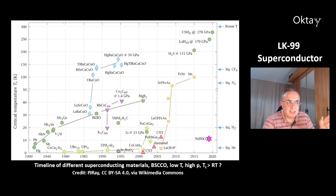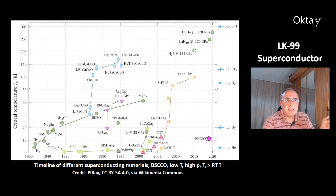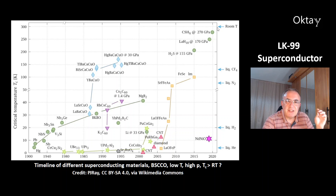Other materials can also be superconductors. Here at the top right, these are hydrides — for example, hydrogen sulfide or LaH10. These materials can become superconductors, but only at high pressures. And what you want to have is a superconductor with a critical temperature above room temperature.